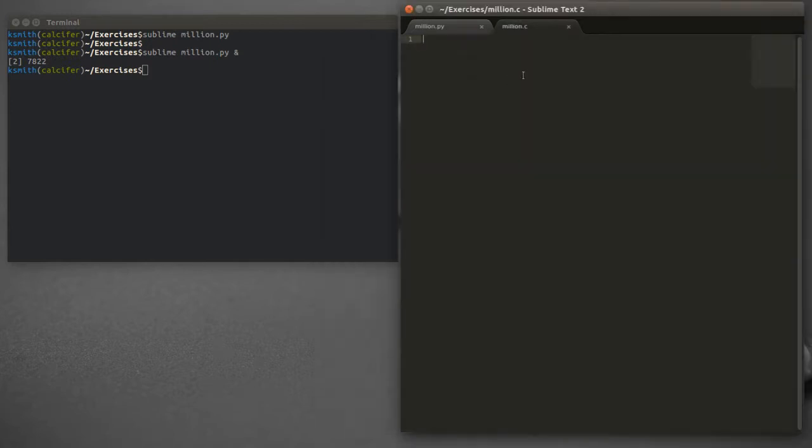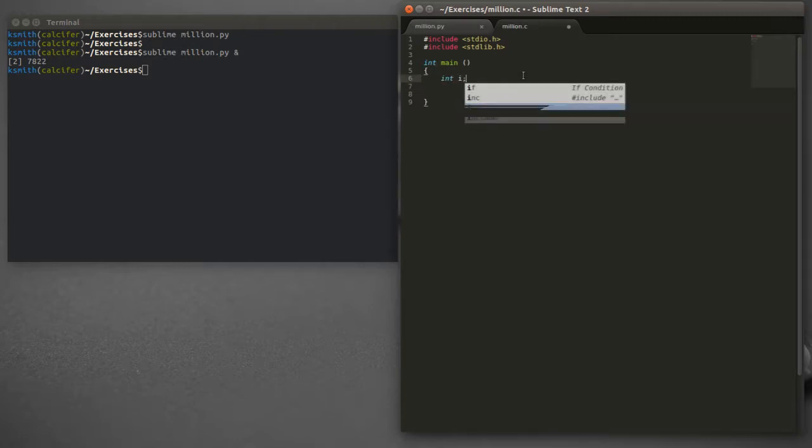Okay, and we'll begin by a couple of include statements. So these will add the libraries that we need. stdio.h and stdlib.h. And now we'll make the main loop. You'll learn about this in a future lecture. And now, inside the main loop, we'll make, once again, our counter variable, integer i.